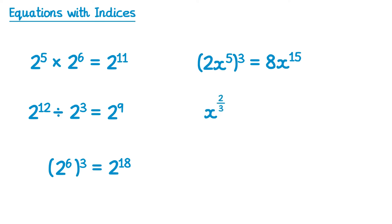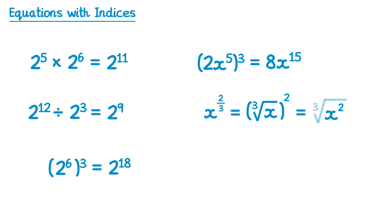Sometimes you have fractional indices. The number on the bottom will always tell you the root that you're going to do — so in this case it's the cube root — and the number on the top tells you what power to raise that to, so in this case squared. This is the same as the cube root of x all squared, or you could do this in either order: you could start by squaring, so x squared, and then cube root that. Sometimes one of these may be more useful than the other depending on the question.